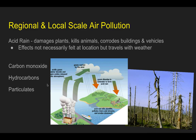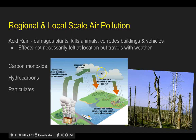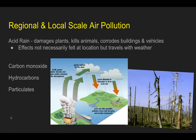Regional and local scale air pollution. You've got things like acid rain happening. Acid rain comes from factories, and it damages plants, kills animals, and corrodes buildings and vehicles. These effects are not necessarily felt at the location where the factories are — it gets into weather patterns and may be dropped somewhere else because it travels with the weather. Things that create acid rain include carbon monoxide, hydrocarbons, and particulate matter in the air from burning.